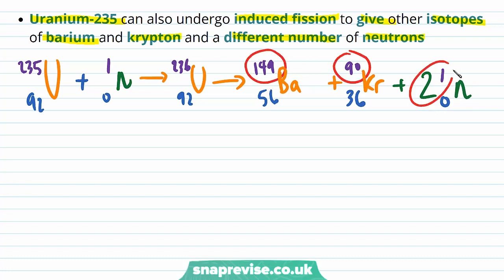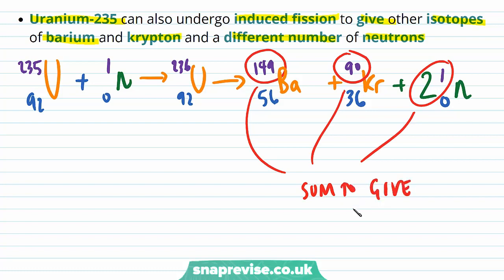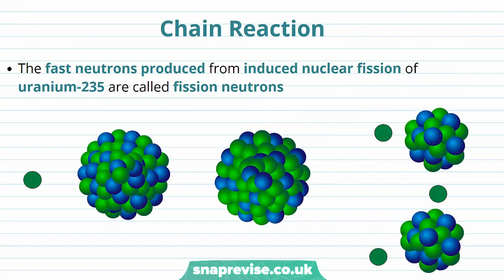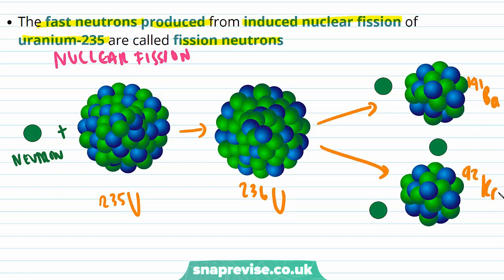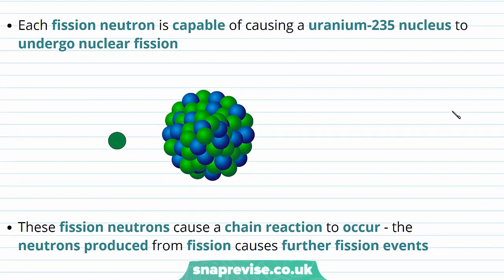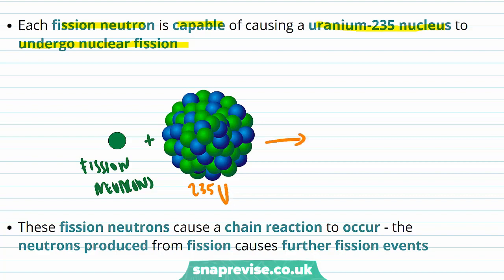Notice that all of the nucleon numbers sum to give 236 as expected. Now we're going to learn about the chain reaction in induced nuclear fission. The fast neutrons produced from induced nuclear fission of uranium-235 are called fission neutrons. A slow neutron combines with uranium-235 to produce uranium-236, which splits into barium-141 and krypton-92, also producing three fission neutrons.